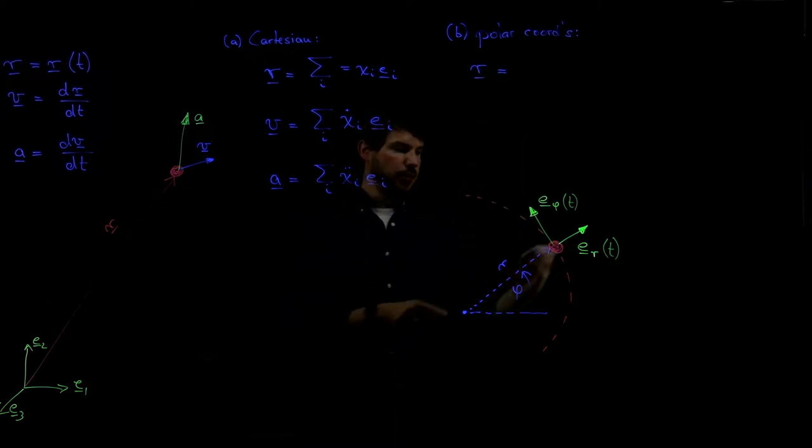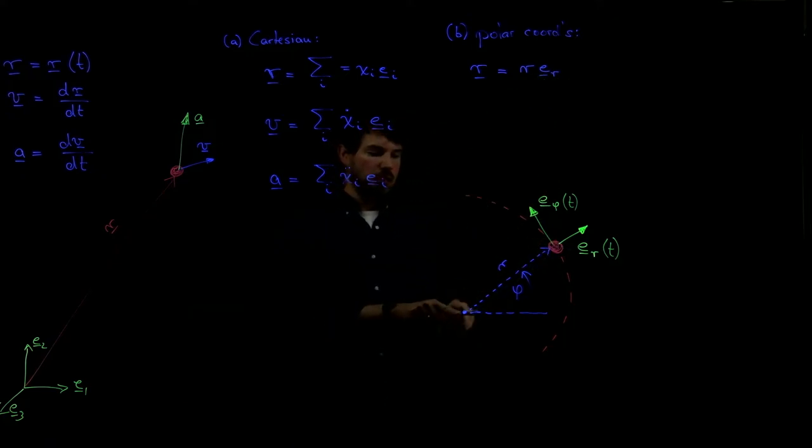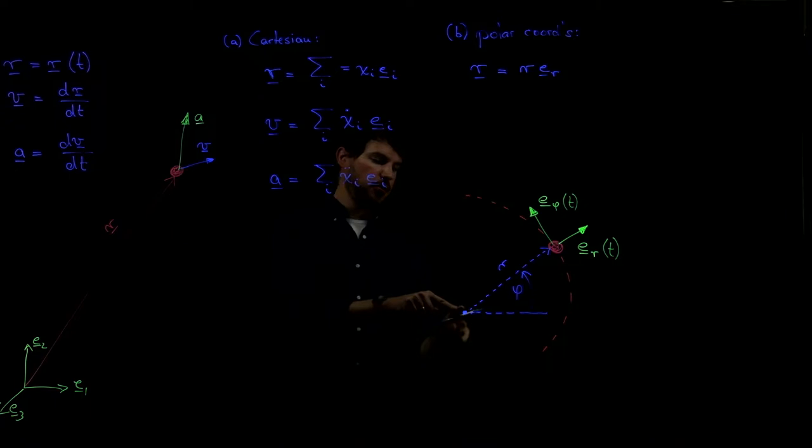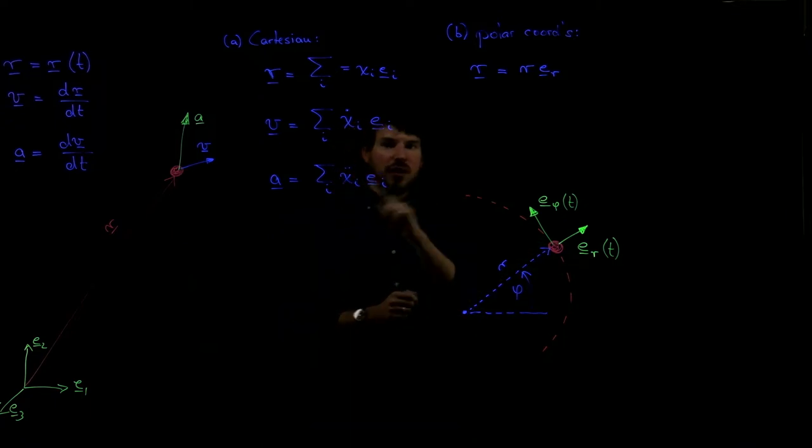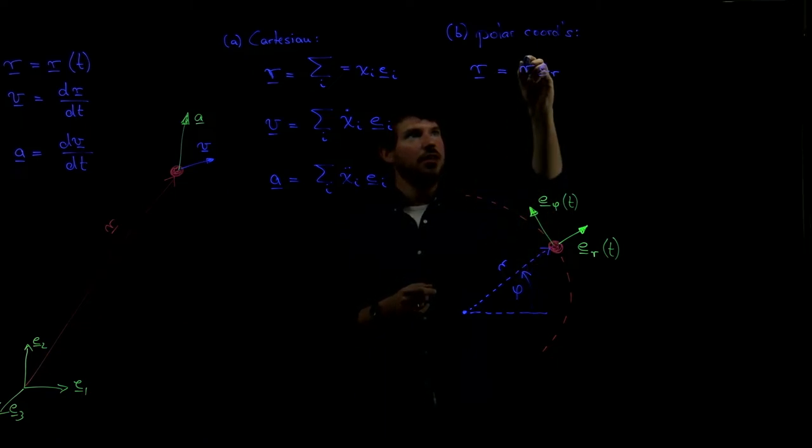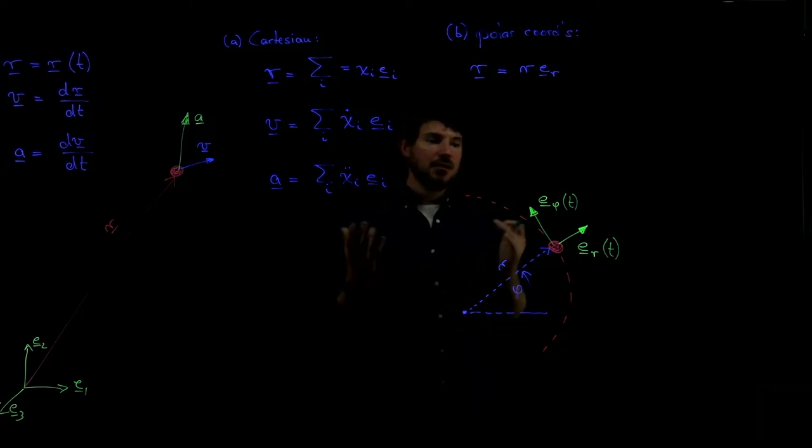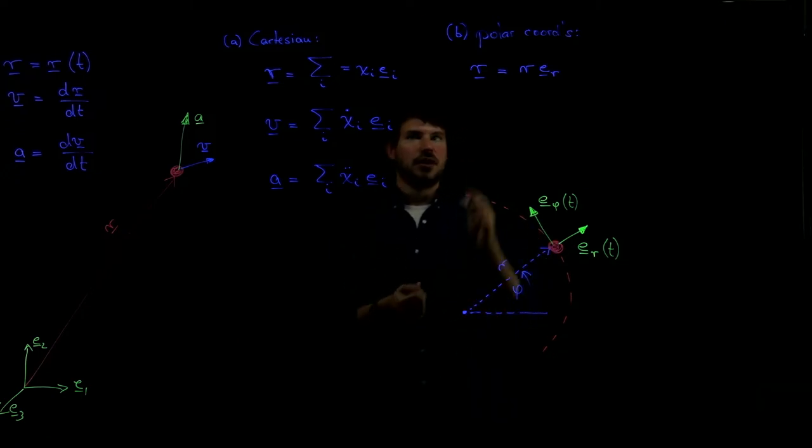The position vector is simple. There's nothing else but the current radius in the ER direction, right? You want to find this point, all you go is in the ER direction by a distance r. When it comes to velocities, we have to be a little careful. Because when I take time derivatives, I cannot simply put a dot on top of the r, because my ER also depends on time. And this leads to the interesting relations we derived in class.